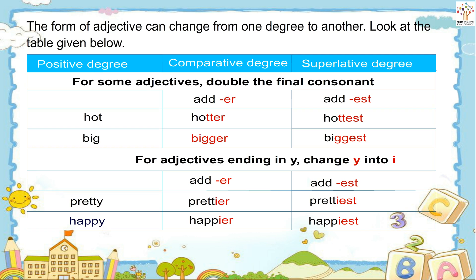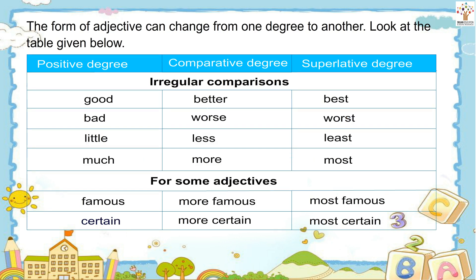For adjectives ending in Y — change Y into I, then add ER or EST. Examples: pretty, prettier, prettiest; happy, happier, happiest.